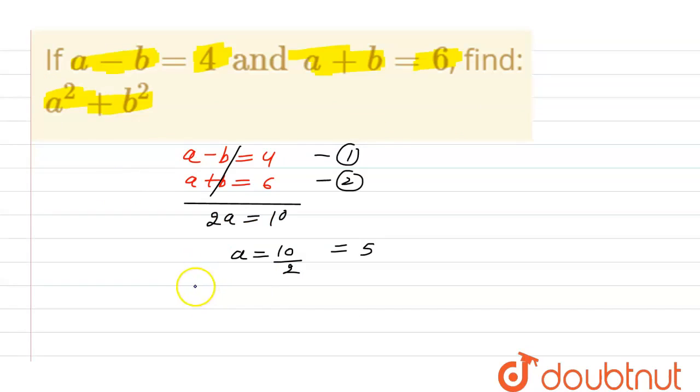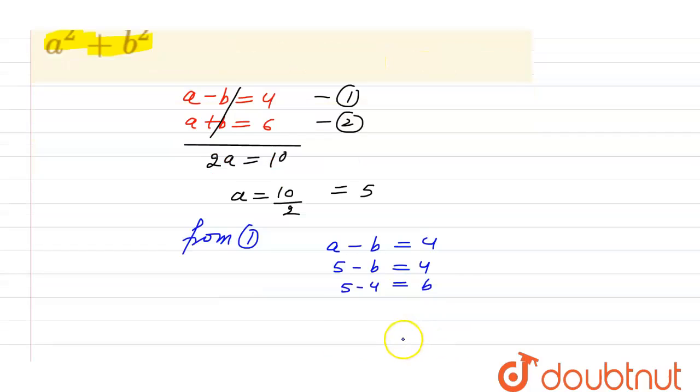From equation one, we have a minus b equals 4. Since a is 5, we get 5 minus b equals 4. Therefore, 5 minus 4 equals b, so the value of b is 1.